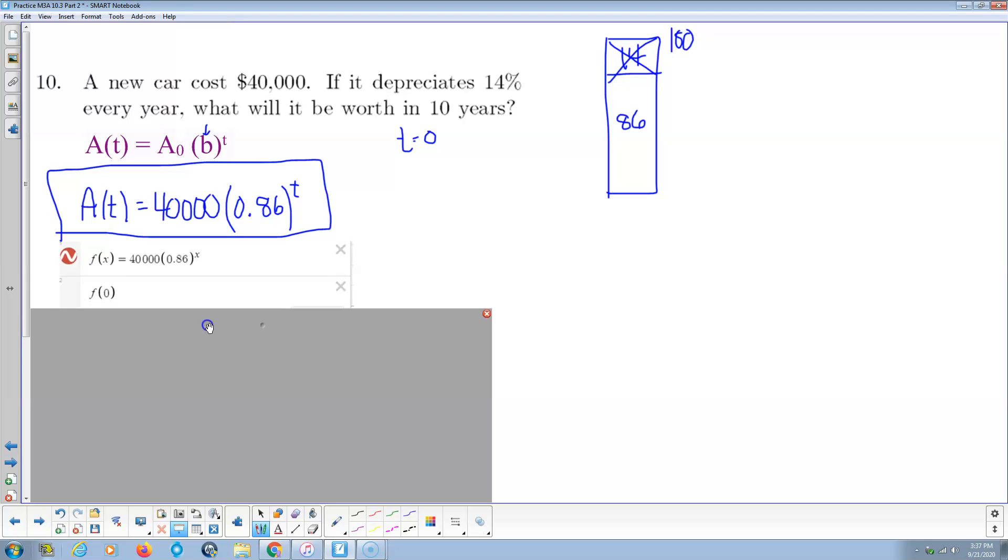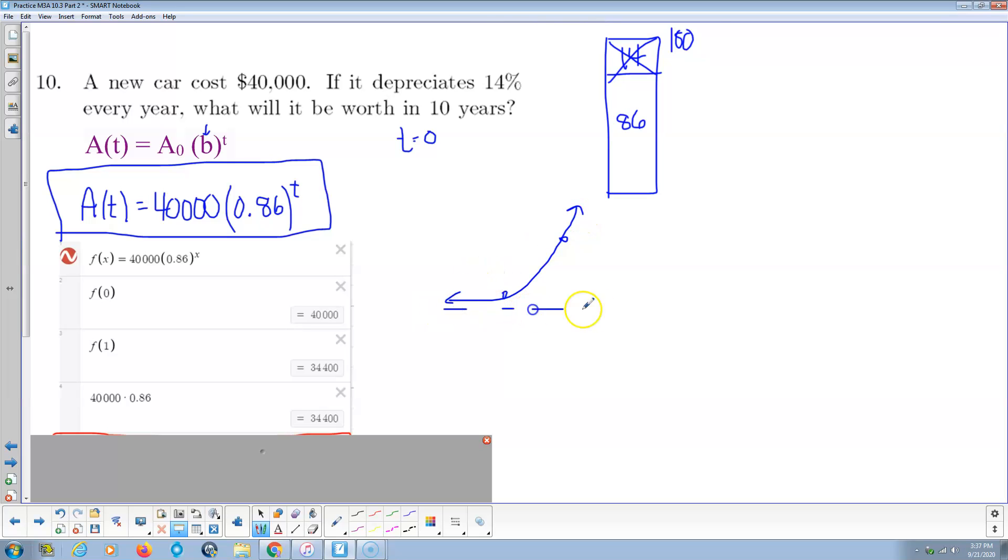We put that into Desmos. We check it. We do f of 0 should be 40,000. And then what's 86% of 40,000? Well, whatever that is, that should be f of 1. So I put f of 1 in, I get 34,400. I say, well, I don't know if that's right, so let me do 0.86 times 40,000. And that's that number right there, 34,400. So again, boom, I hit both points exactly with this function. So this function, this math model, is the model for that situation.